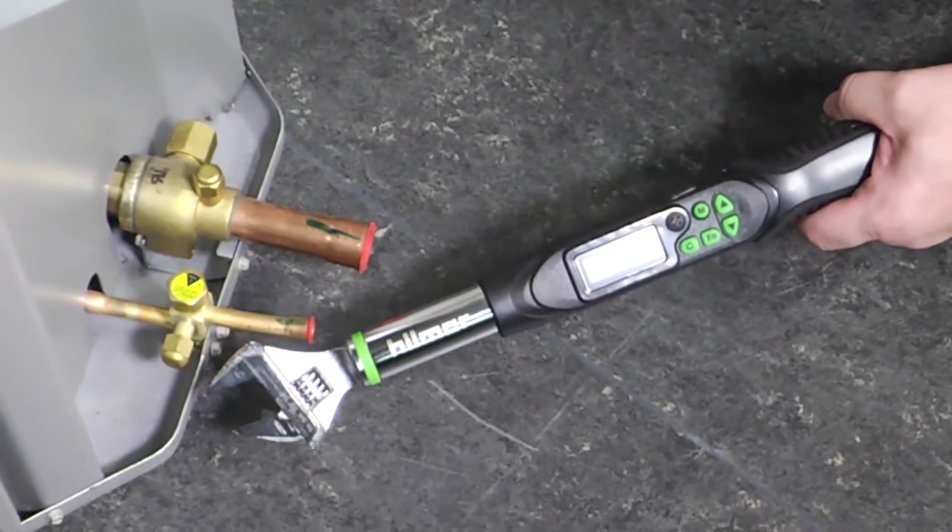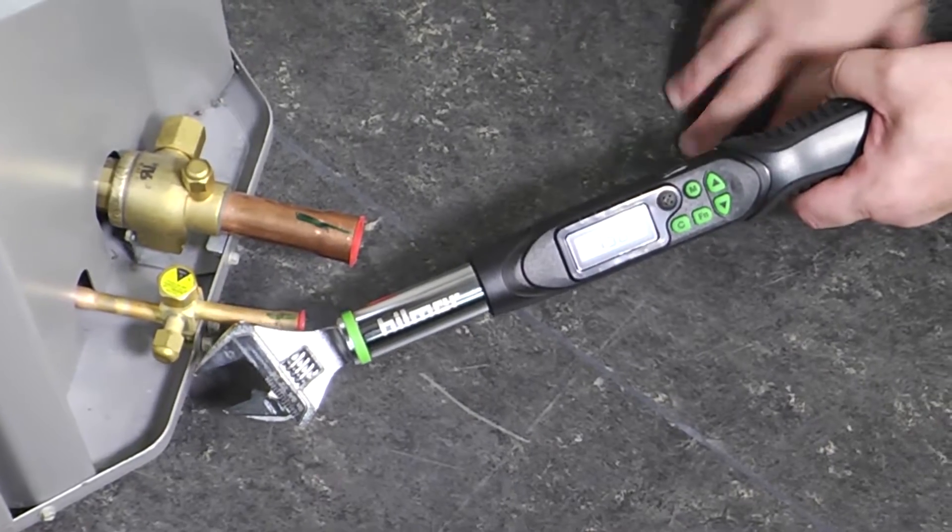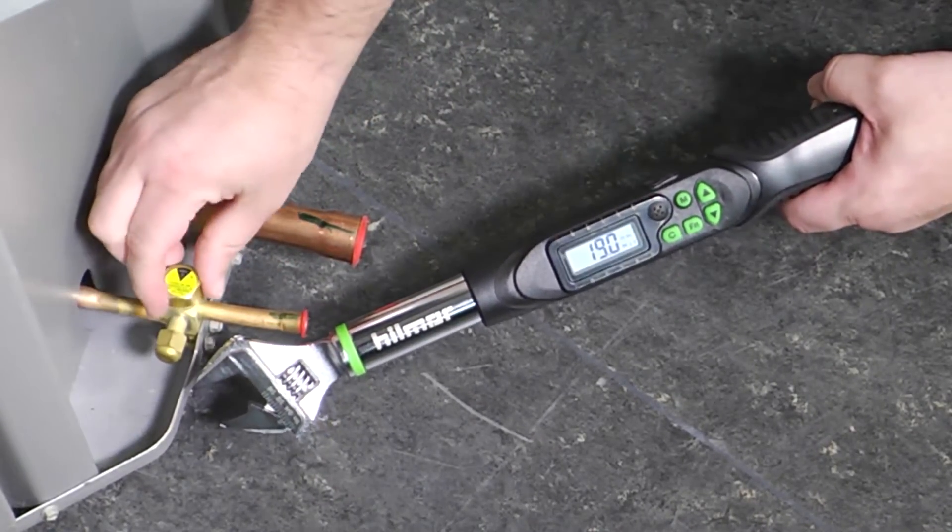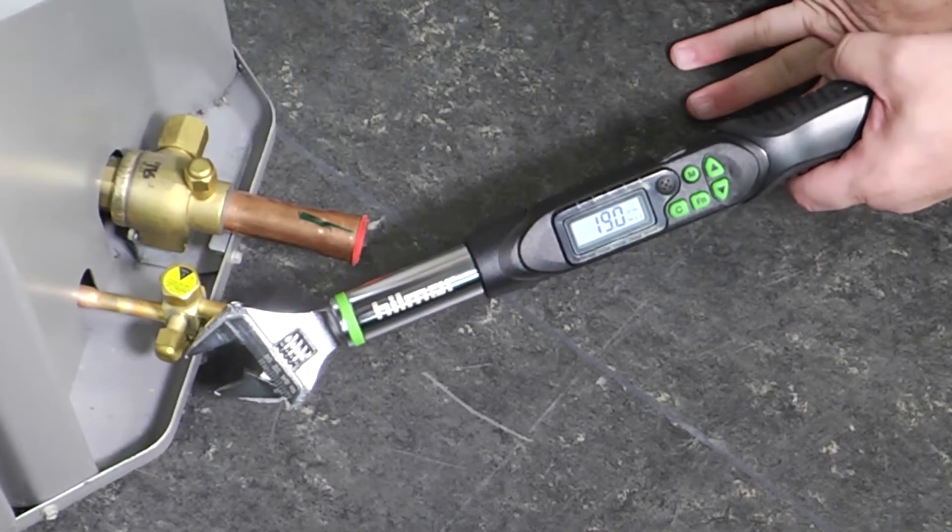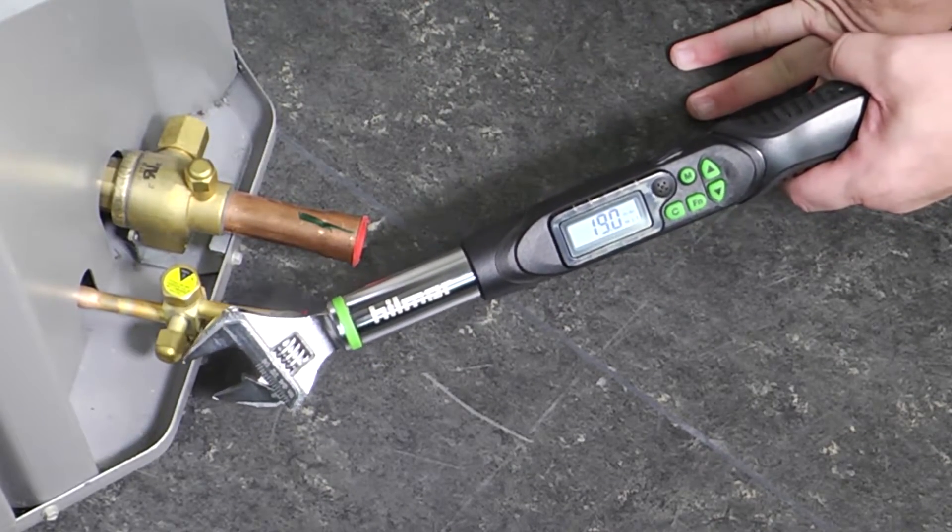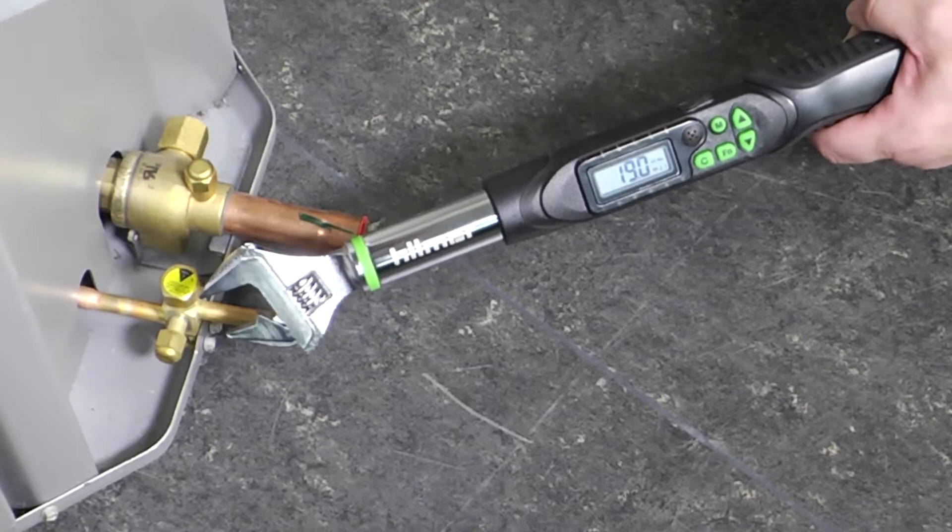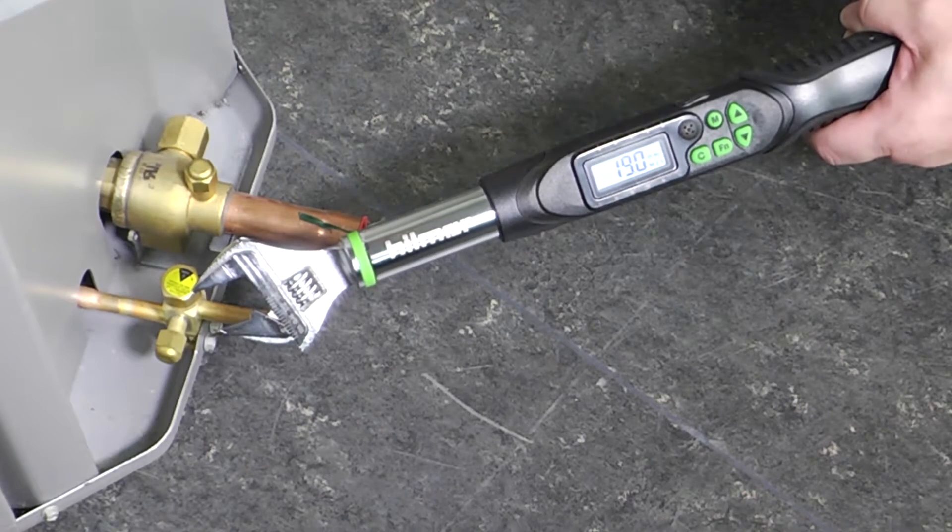Okay, so for this example here, we're looking at a service valve cap. Now normal rule of thumb is we would tighten them down finger tight and give it like a half a turn, a quarter turn, something like that. But if we wanted to be specific, a matter of fact, the installation manual for this unit says it should be tightened down to eight foot pounds.